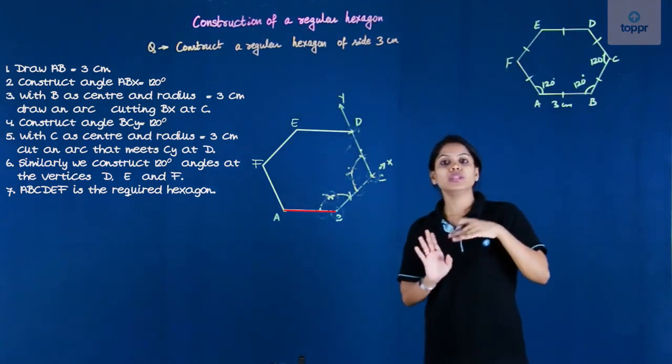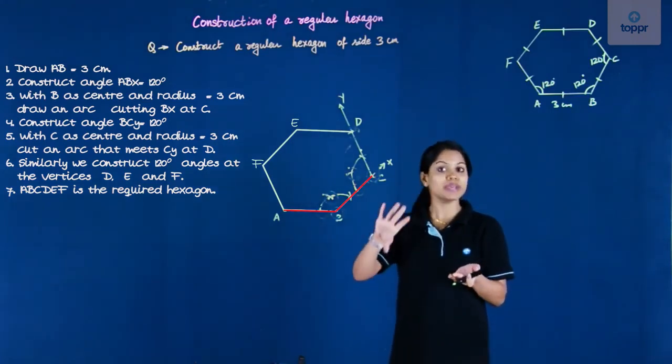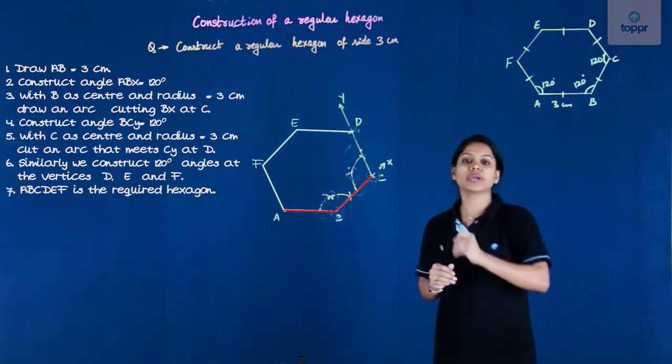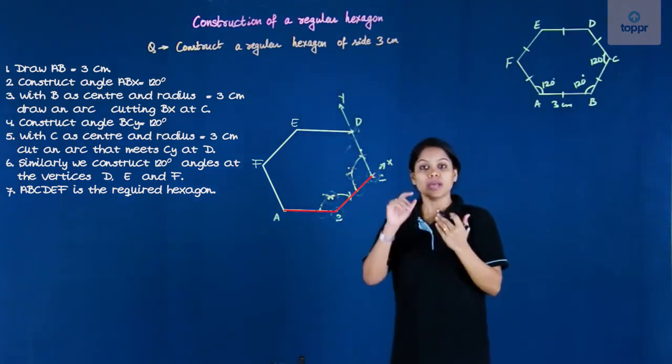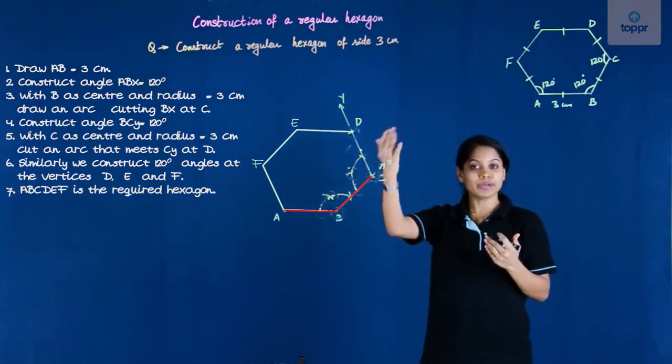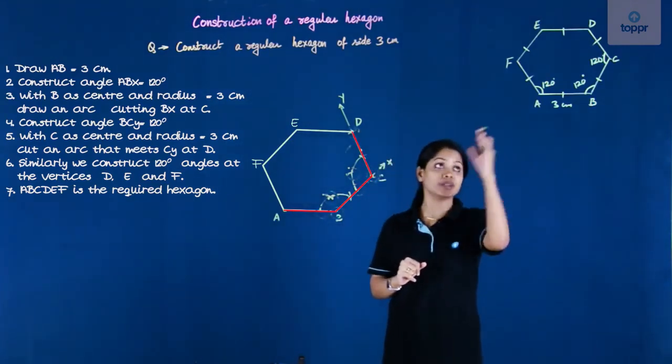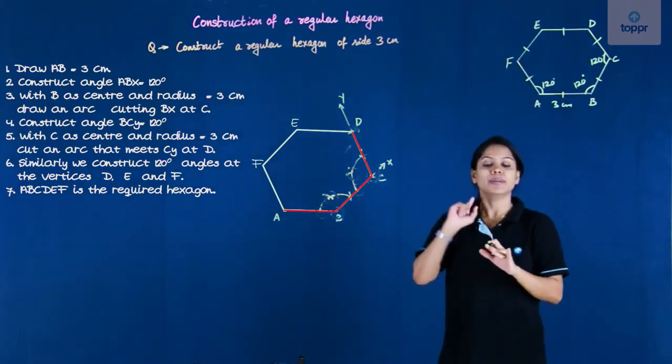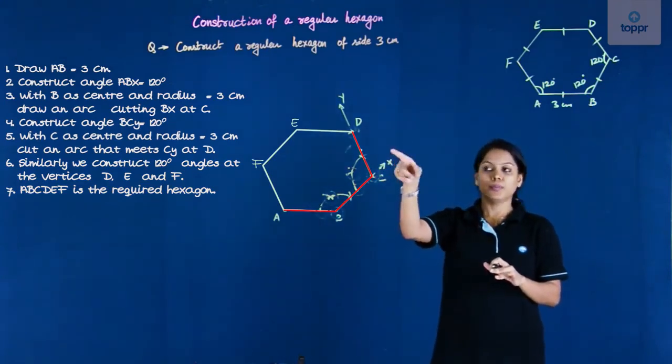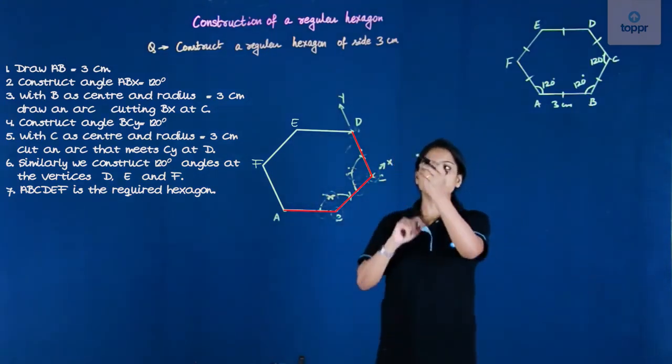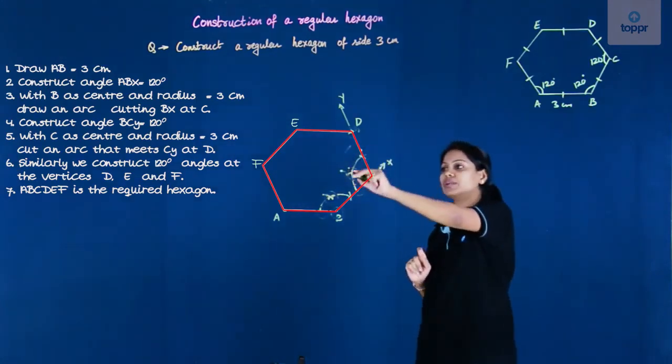But then to locate the point C, we cut an arc of 3 centimeter measure with B as the center. After we have located C, we have constructed another 120 degree in the form of a ray CY. Now to locate the point D on the ray CY, we have cut the same measure arc, that is 3 centimeters once again. But this time the needle is at C and the point that you get is D.